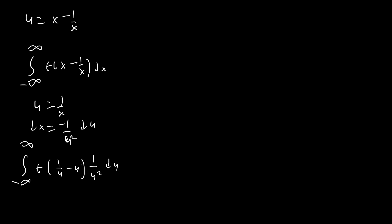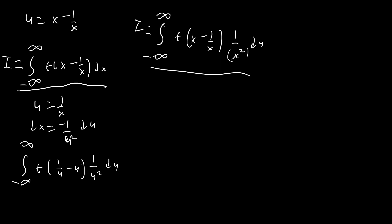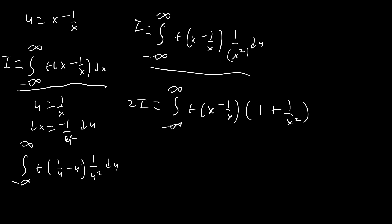If we set u equal to negative u, we end up with the integral from negative infinity to infinity of f(u minus 1/u) times 1 over u squared du — it's really the same thing since u squared stays positive and the negative du is absorbed by the bounds. Changing the dummy variable back to x, we have x minus 1/x and 1 over x squared. Adding our original integral i to this other form of i gives us 2i equals the integral from negative infinity to infinity of f(x minus 1/x) times (1 plus 1/x squared) dx. Notice that (1 plus 1/x squared) is just the derivative of (x minus 1/x).